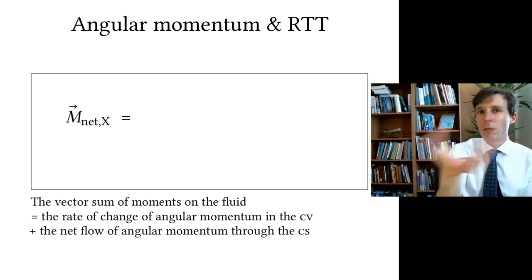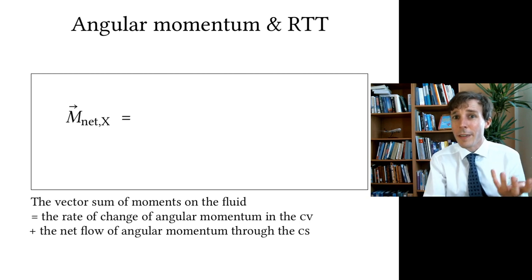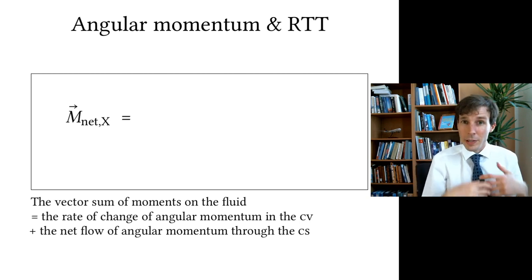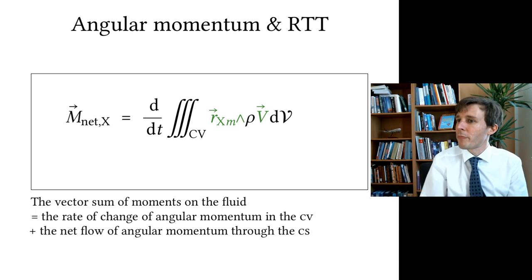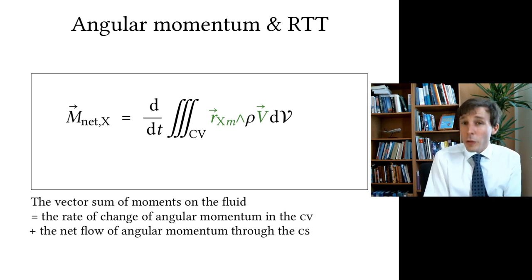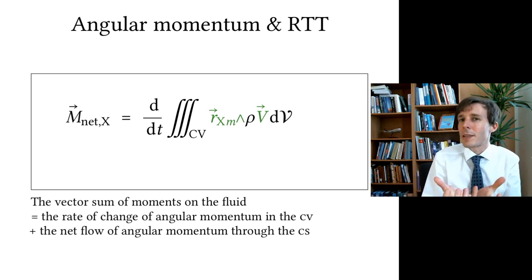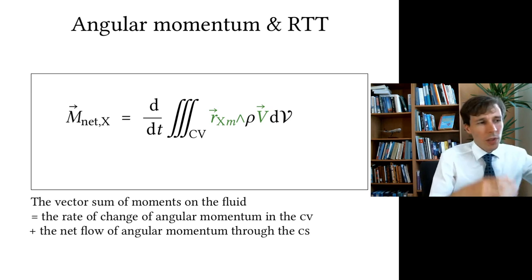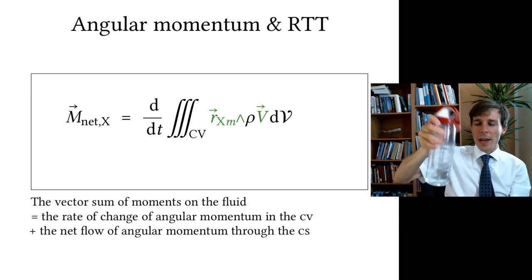This vector represents the sum of all moments applying to the fluid. It can come from two sources. The first term is the rate of change of angular momentum inside the control volume — for example, if you have a bottle of water and you spin the water inside.